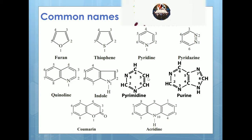There are certain common names for heterocyclics that should be learned by heart because they are very important. Furan is a 5-membered ring containing oxygen with 2 double bonds. If oxygen is replaced by sulfur, it is thiophene. A 5-membered ring with nitrogen and 2 double bonds is pyrrole. A 6-membered ring with one nitrogen is pyridine. With more than one nitrogen: if the nitrogens are directly connected it is pyridazine; if at meta position it is pyrimidine.